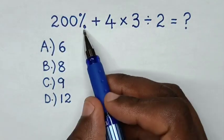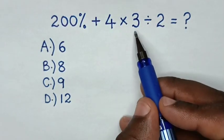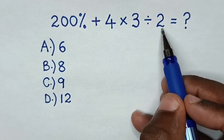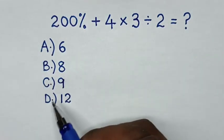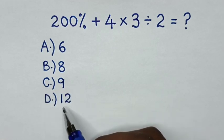Hello! How to solve 200% plus 4 times 3 divided by 2 by selecting between the answers A, 6, B, 8, C, 9, D, 12.